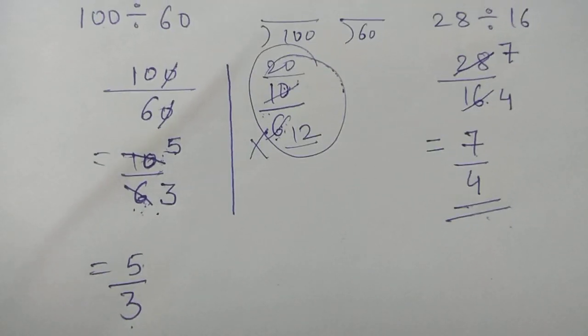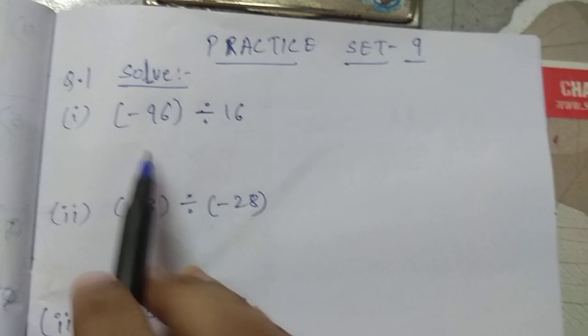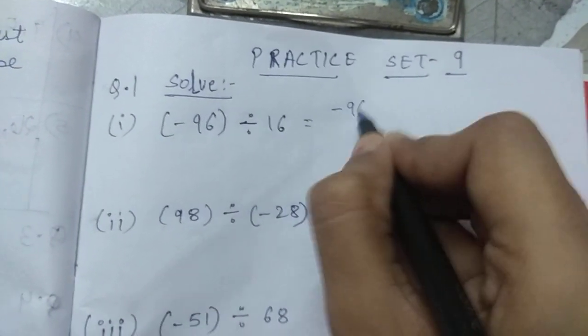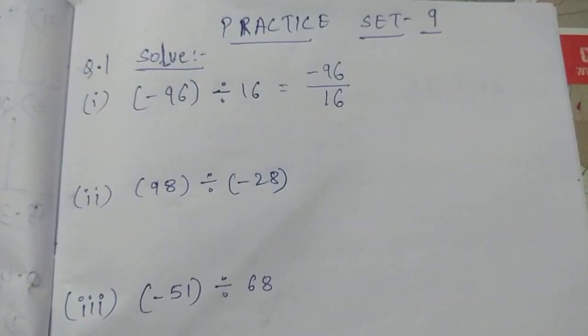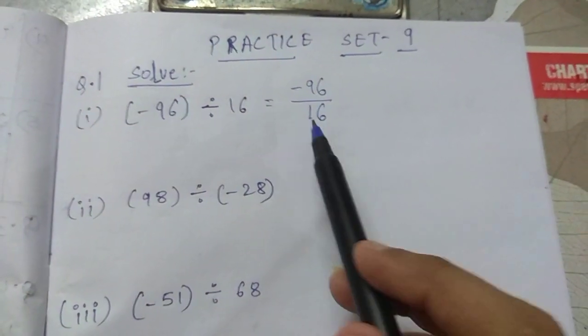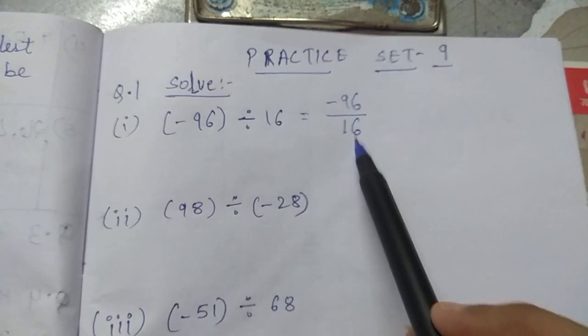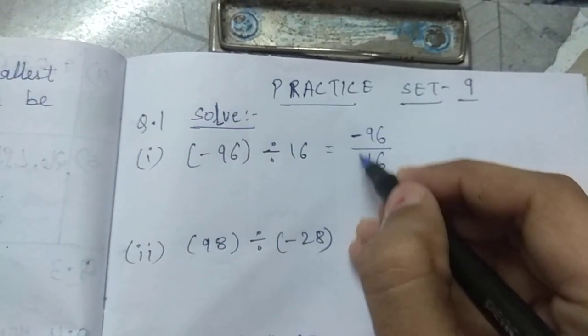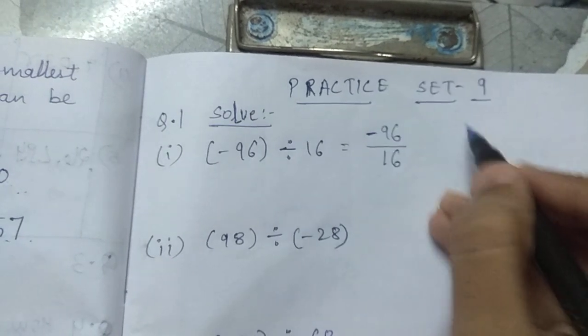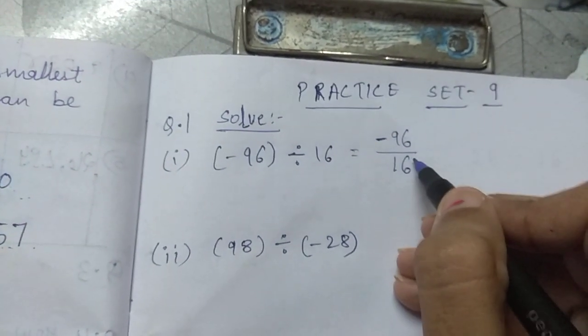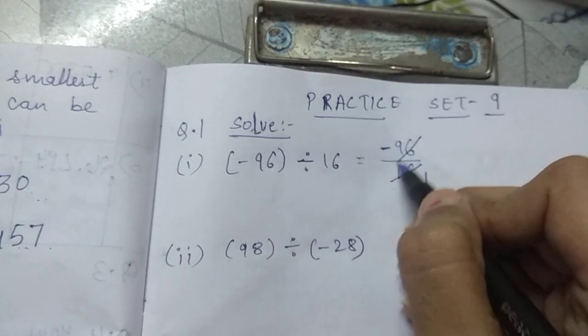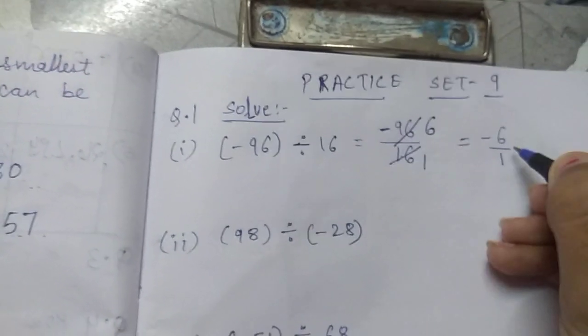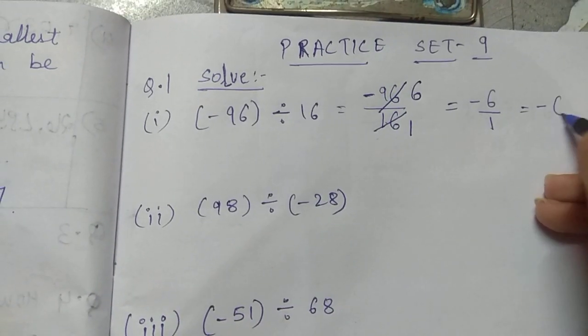Now we will start with practice set 9. First question is, minus 96 divided by 16. So I am going to write here, minus 96 divided by 16. So minus 96 and 16 comes in which table? So yes, both these numbers comes in 16's table. Now ignoring the sign, we are just going to see to the number first. In final answer, we will be considering the signs. Fine. So 16 how many times? 1 times 16, 1's are 16. 16, 6 are 96. So what we get is minus 6 upon 1. So this minus 6 upon 1, we can write as minus 6.